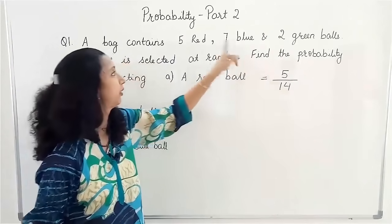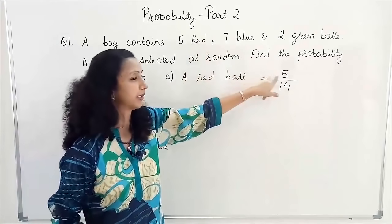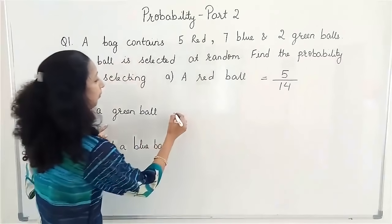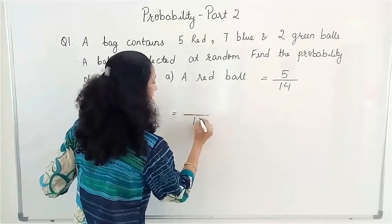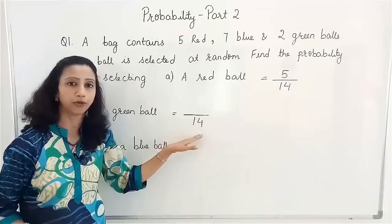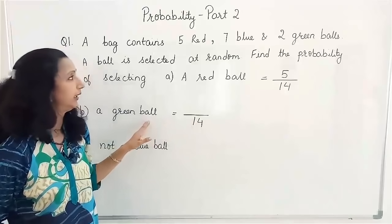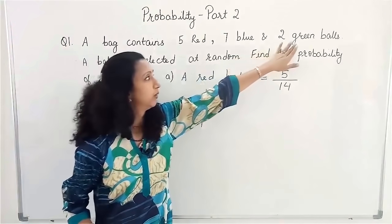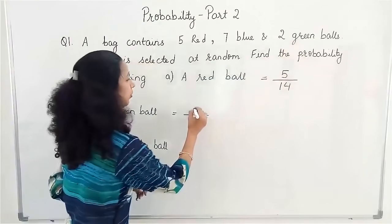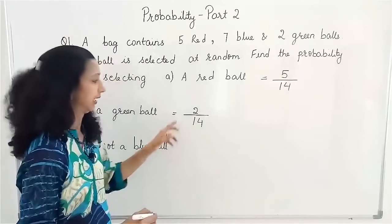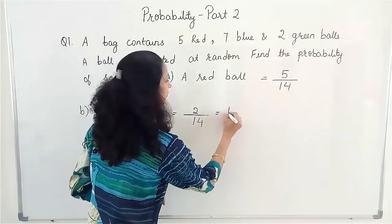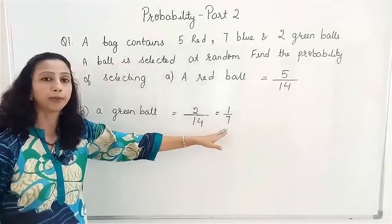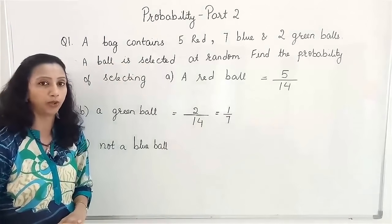The favourable outcome — red — comes in the numerator. For a green ball, the denominator remains 14 because the total number of balls is 14. But I have only 2 green balls, so 2 comes in the numerator. It can be reduced to lowest terms as 1 by 7. So this is the probability of getting a green ball.